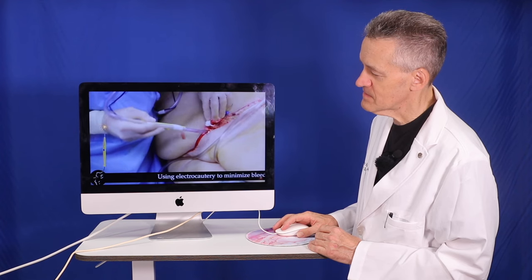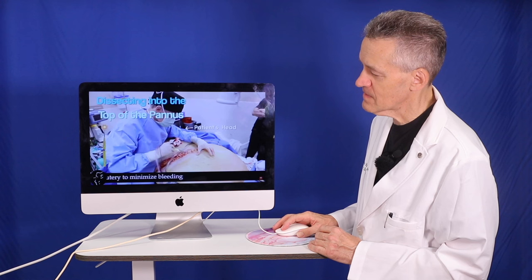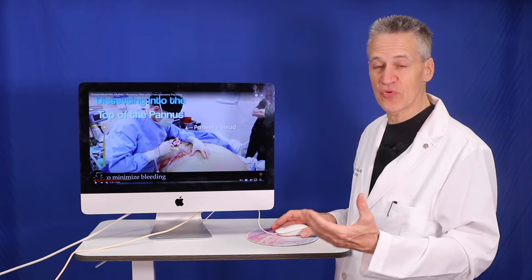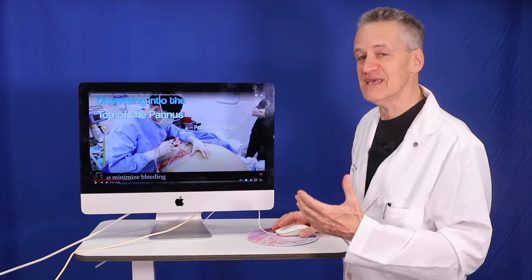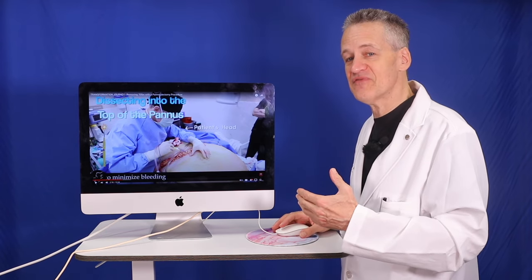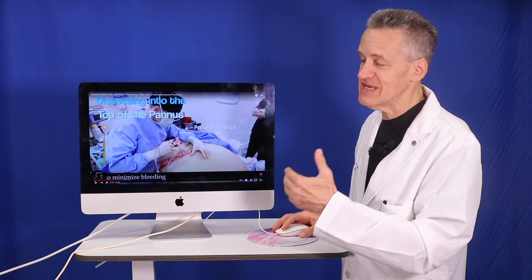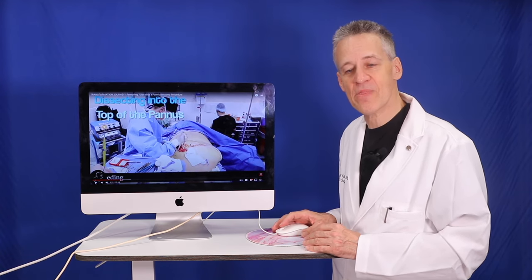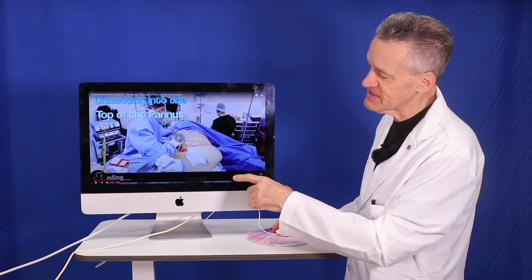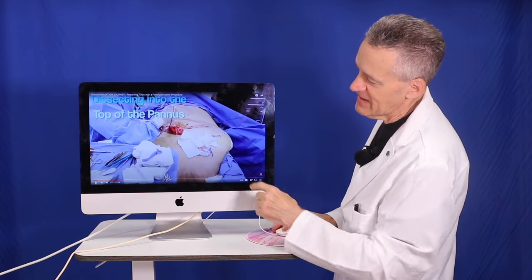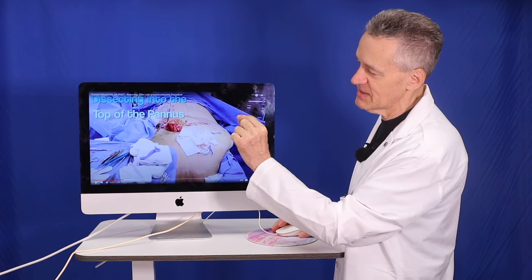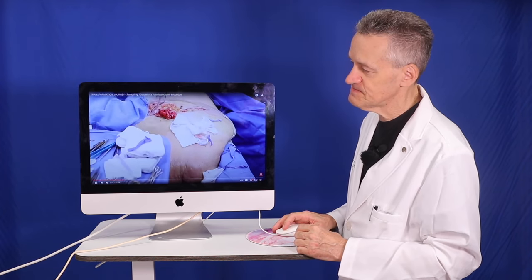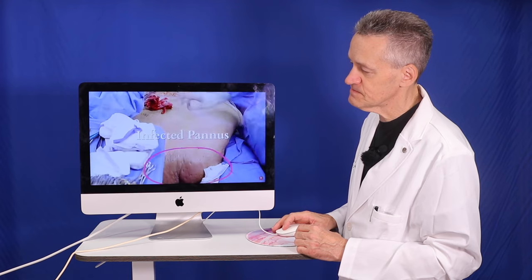One of the problems is this area of skin becomes so dependent. It's so far down. Even if he was on ozempic or had gastric bypass, he would still have a lot of excess skin and fat. Someone's asking how do you control blood loss? This instrument is called electrocautery. It conducts electricity, and when I touch the blood vessel with the cautery, it burns the blood vessel and stops the bleeding.